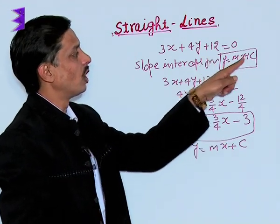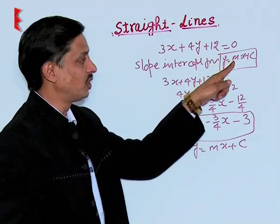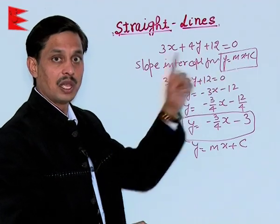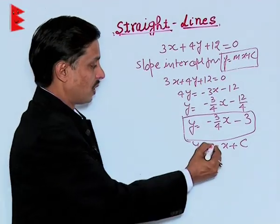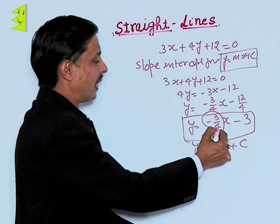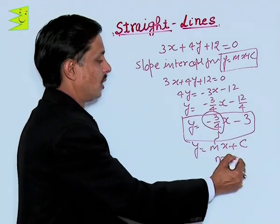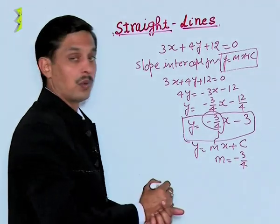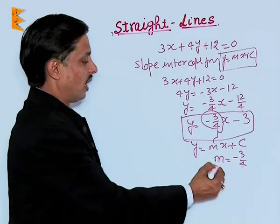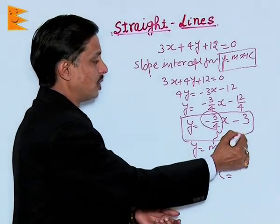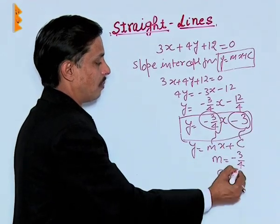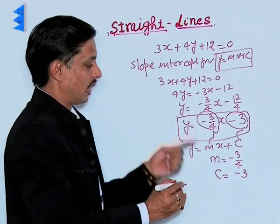In the line y equals mx plus c, the coefficient of x, that is m, is known as the slope. If we compare, we will find the slope is minus 3 by 4 and the length of intercept c is minus 3.